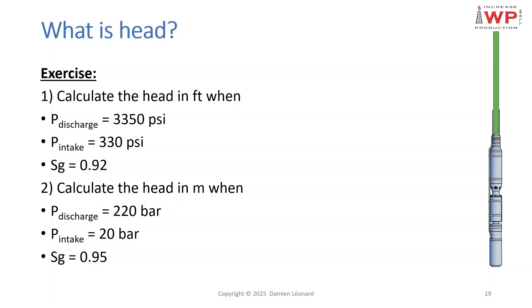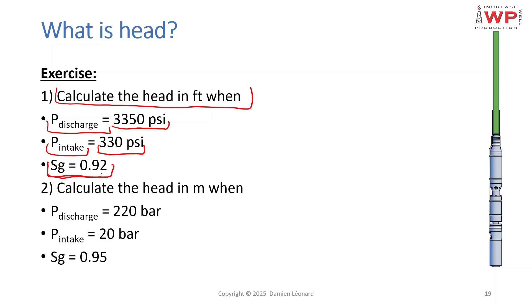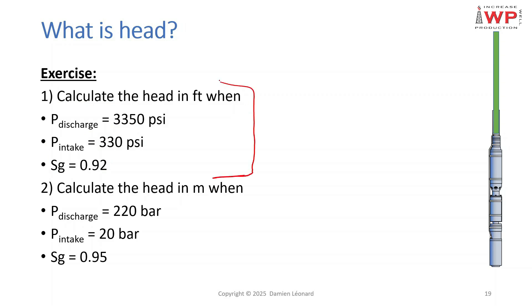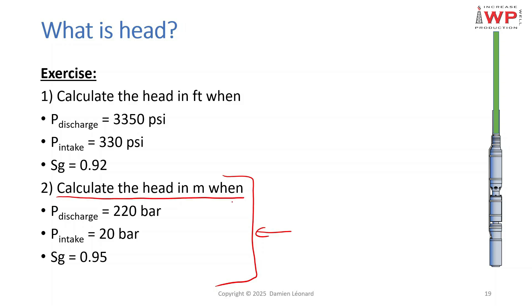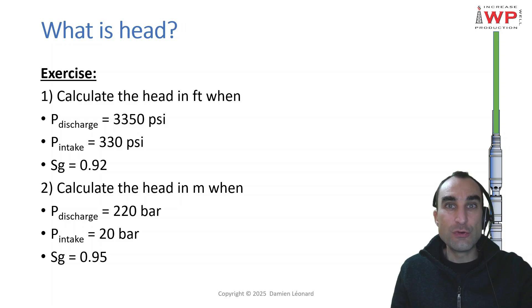Now let's practice. Calculate the head in feet using the imperial formula when the pump discharge pressure is 3350 psi, the pump intake pressure is 330 psi, and the pumped fluid specific gravity is 0.92. For the second question, use the metric formula to calculate the head in meters when discharge pressure is 220 bars, intake pressure is 20 bars, and specific gravity is 0.95. Put your answers in the quiz that follows, then watch the video with the answers.